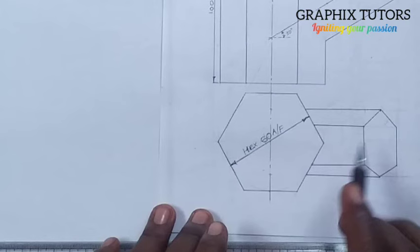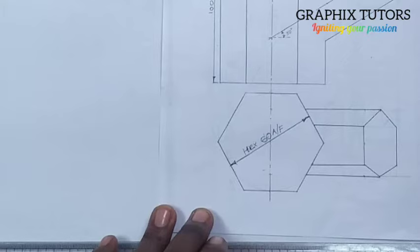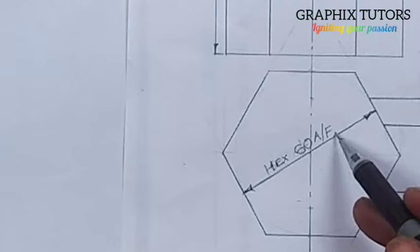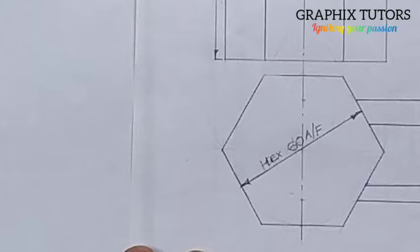First of all, start drawing from the plan. We are told that the plan is a hexagonal shape. Place an 'x' here — H-E-X means hexagon, 60 across flat. A slash F means across flat. So draw a hexagon 60 millimeter across flat.